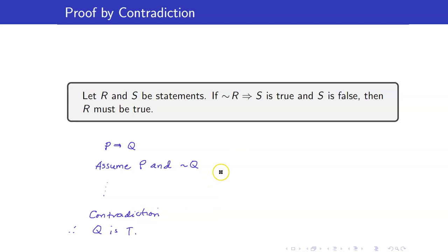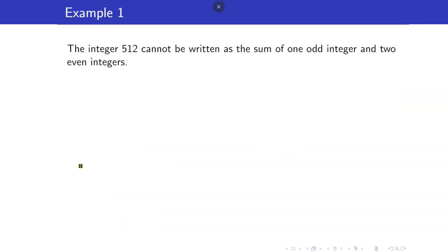However, for this lesson, we will be proving statements where we do not have any implication — just a statement R that we want to show is true. For example: the integer 512 cannot be written as the sum of one odd integer and two even integers. This is not an implication.